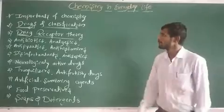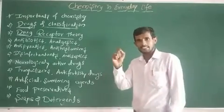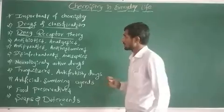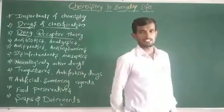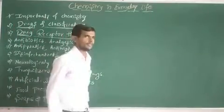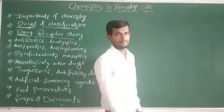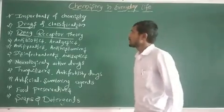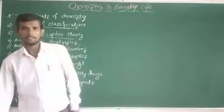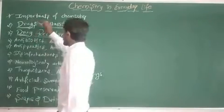My next point: drugs and their classification. What are drugs? Drugs are single chemical substances or a group of chemical substances which are used to prevent diseases. Our drugs are classified on the basis of 4 points: first, based on pharmacological effects; second, based on drug action; third, based on chemical structures; and fourth, based on molecular targets. Based on these points, drugs are classified.